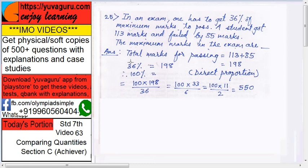Because you have to get 36%. Now, if 36 is 198, then 100 is, it should be higher. So, direct proportion. So, solve this, bottom top upon top, 100 into 198 by 36, solve this, you get 550. We have discussed direct proportion.